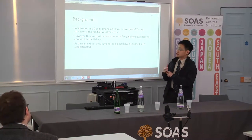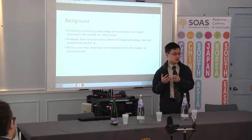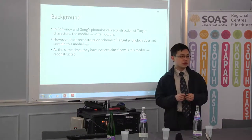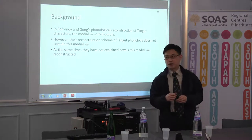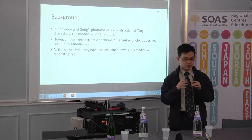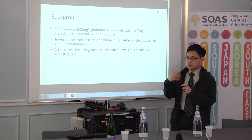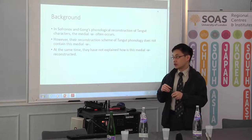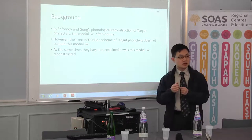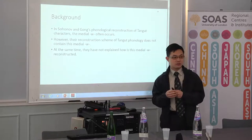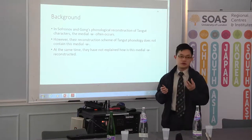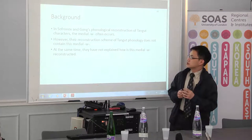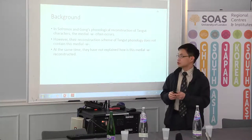In Angkong's phonological reconstruction, which is also used in the Chinese Tangut dictionary, there is a medium Wu which often occurs in the reconstructed pronunciation of many Tangut characters. I would like to follow the pathway of previous prominent scholars and try to work on the rhyme books and reconstruct the same pronunciation, but they haven't mentioned how this Wu comes from, and they have not explained how this medium Wu is reconstructed. So it becomes a question.